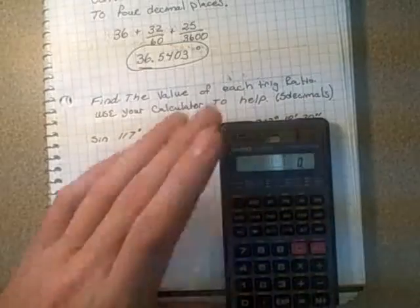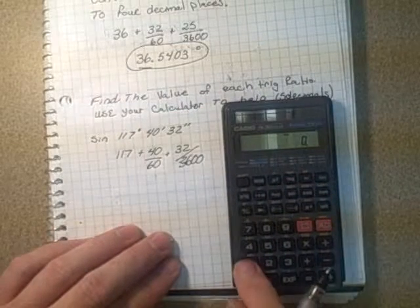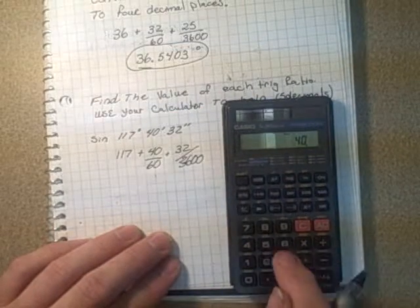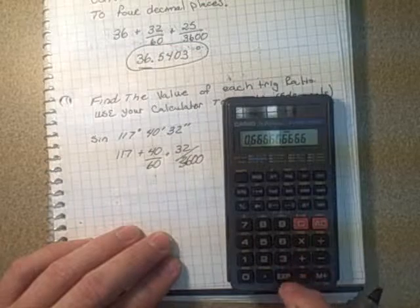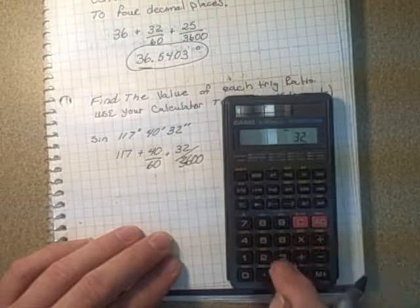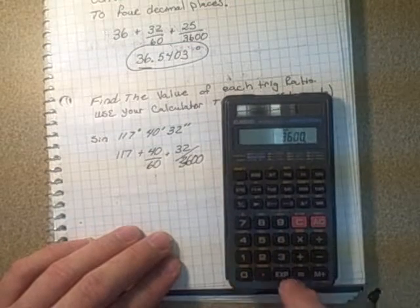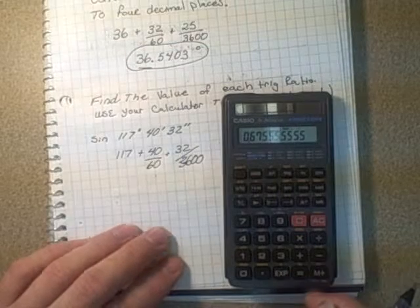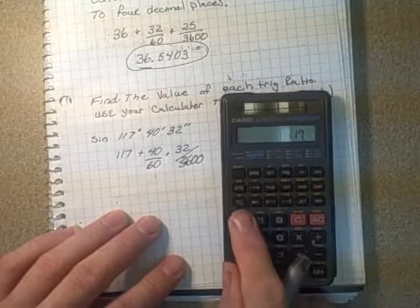Let's do that on our calculator here. I'm going to put in the 40 divided by 60 plus 32 divided by 3600. So I get that decimal number there and I'm going to add 117 degrees.